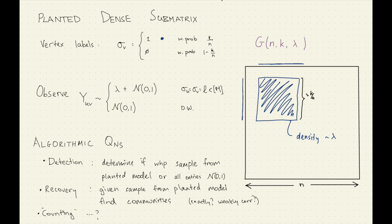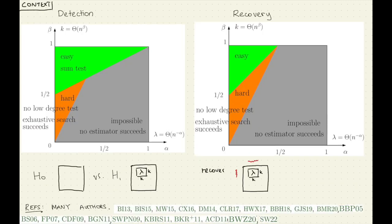The algorithmic questions you could ask: if you're given either a sample from this model or a sample from the model where you don't have a raised mean, you could try to determine which one it is. You could try to recover something — perhaps get an estimator over a particular vertex, whether or not it's inside the community — and counting, which we'll talk about in a second.